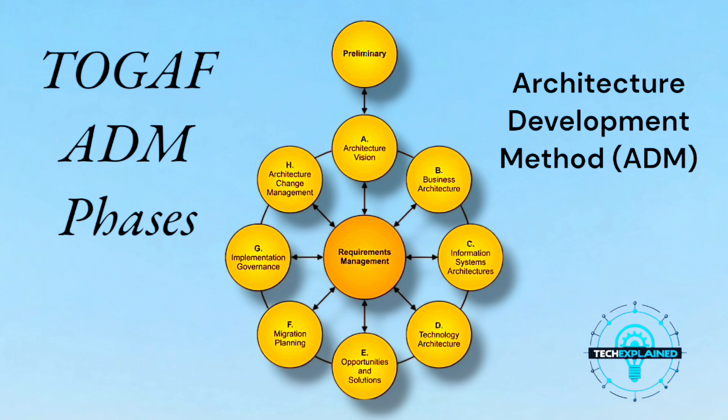Next is Technology Architecture, Phase D. This is the hardware phase — the nuts and bolts. For your house, it's choosing materials like steel beams for structure, wiring for electricity, and tiles for the pool. For an organization, it's about deciding the infrastructure: servers, networks, and tools like cloud services. It's where IT comes into play to support the business needs and information systems.